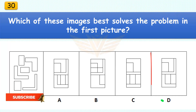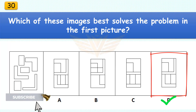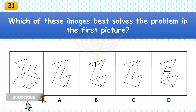Which of these images best solves the problem in the first picture? The correct answer is D. There are six pieces in the assembled puzzle.